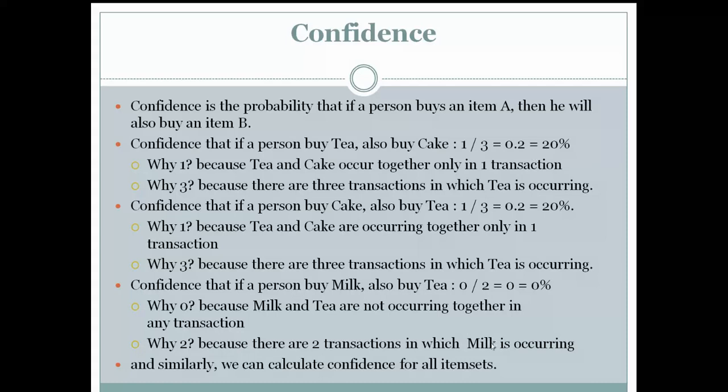Confidence that if a person buys milk they also buy tea is 0/2 = 0, which is zero percent. In this way we can identify all these combinations. That's all.